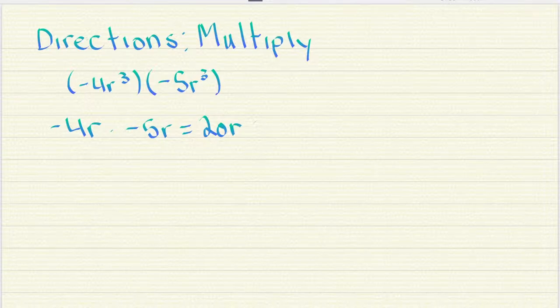The second thing we need to do is add the exponents. 3 plus 3 equals 6. So our final answer will be 20r to the 6th power.